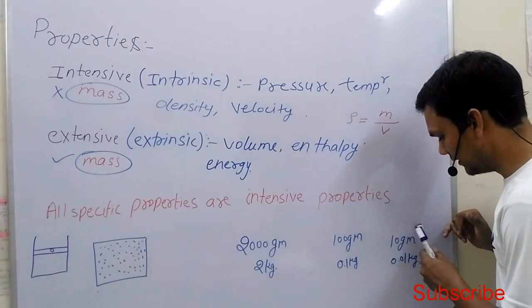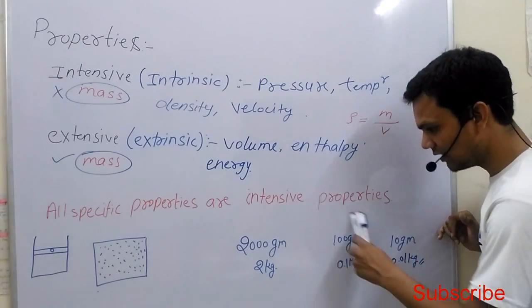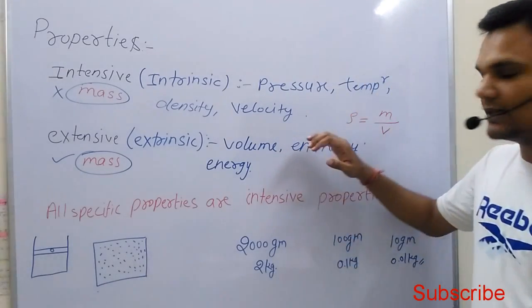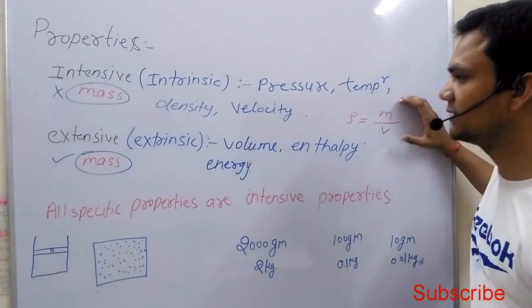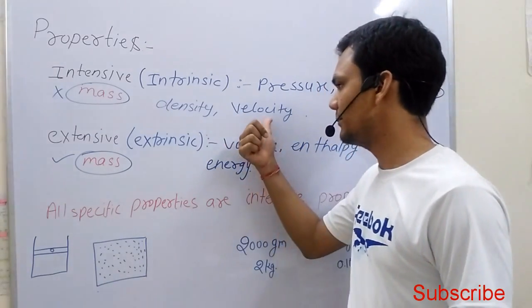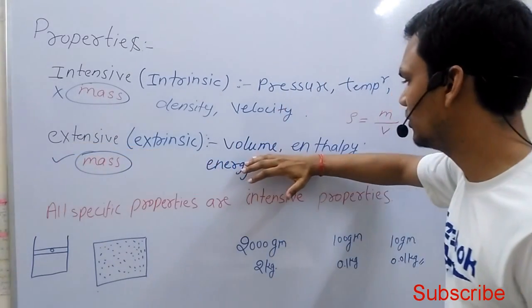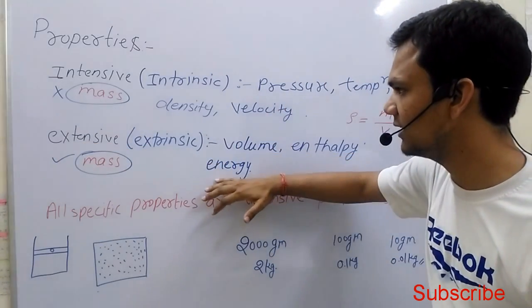You are describing the property of the whole system from a small sample. So density does not depend upon the mass, and the same is true for velocity. Extensive properties include volume, enthalpy, and energy.